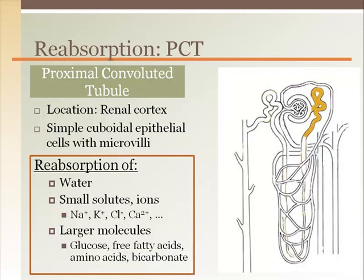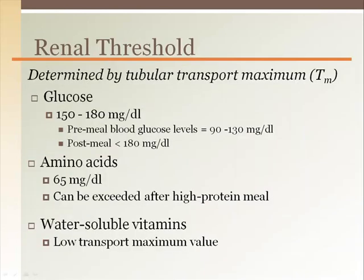All the glucose should be returned to the blood. If blood glucose level exceeds 150 to 180 mg per deciliter — the glucose threshold amount — the excess glucose will remain in the filtrate and be excreted via the urine. This condition is common in diabetes mellitus and some other conditions. For amino acids, the renal threshold is 65 mg per deciliter, meaning excess amino acids will remain in the urine. Water-soluble vitamins have a low renal threshold, so any tiny bit over what we actually need will be excreted via the urine.